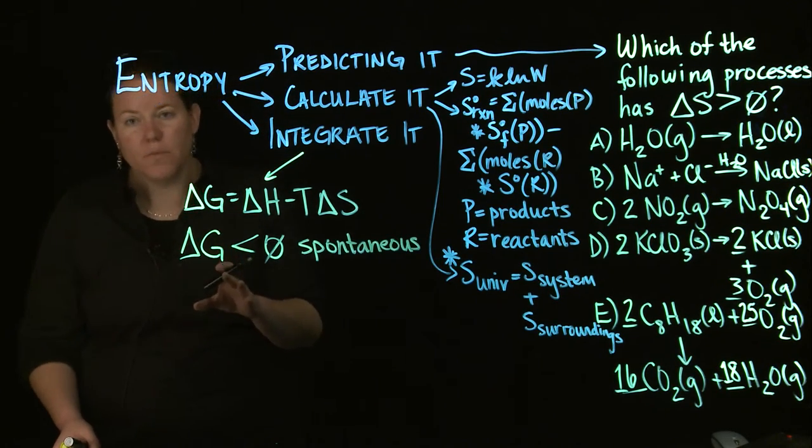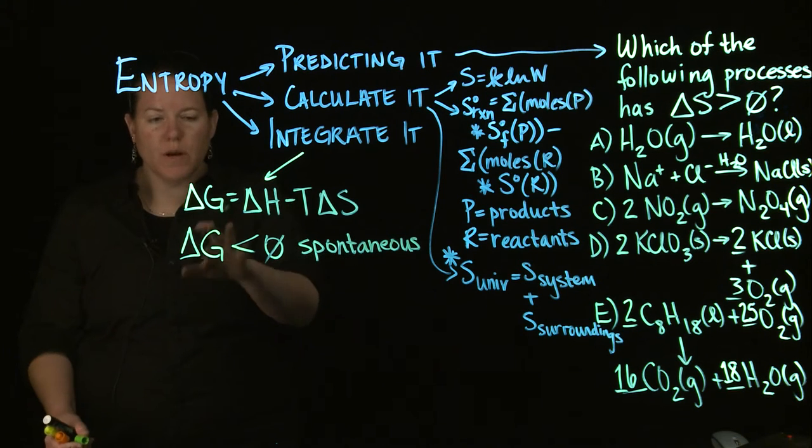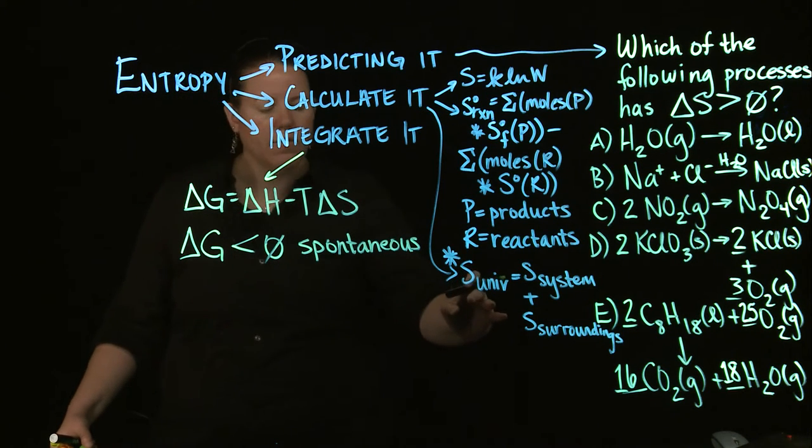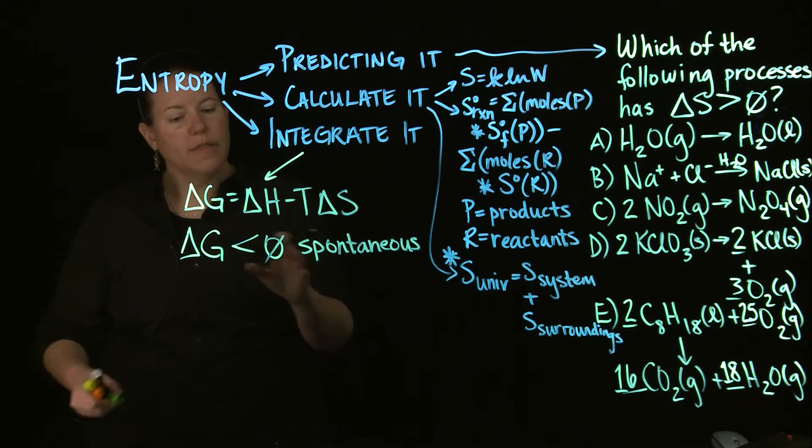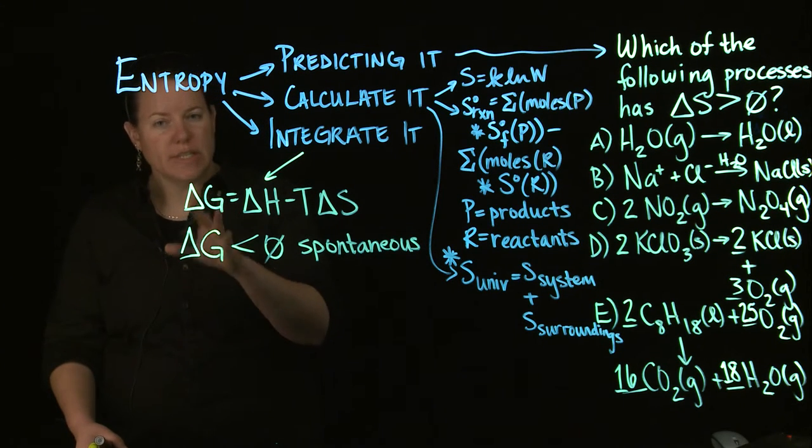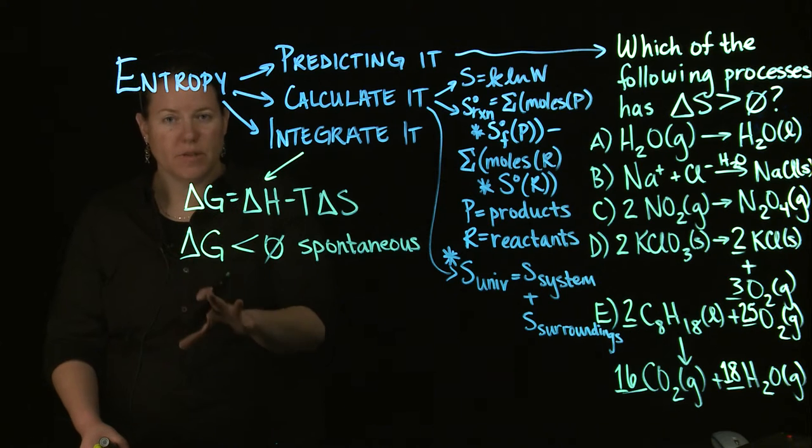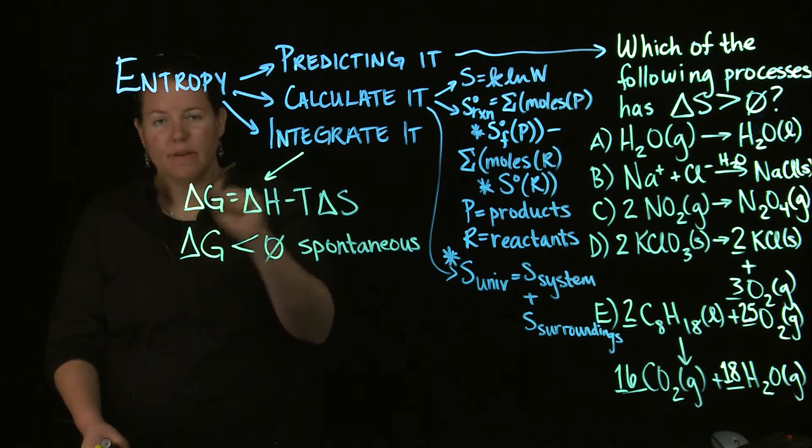And just to give you a sense, why do we care about G more than S of the universe? Because S of the universe is harder to find, and I can use delta G just for the system, and consider it for the system, and talk about spontaneity of that system just by itself. That's why we like it better. It doesn't integrate as much.